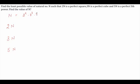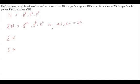So 2n is equal to 2 raised to power (a+1), into 3 raised to power b, into 5 raised to power c. Since this is a perfect square, it means a+1, b, and c must each be a multiple of 2. Then only will it be a perfect square, like 2 squared, 3 squared, 2 raised to power 4, or 3 raised to power 4.